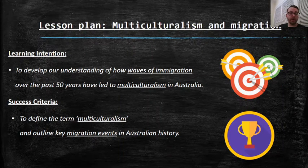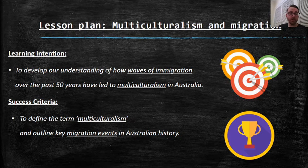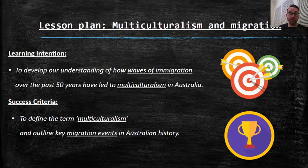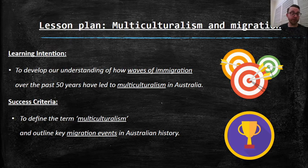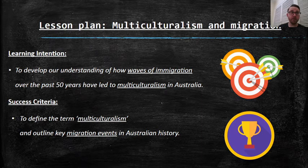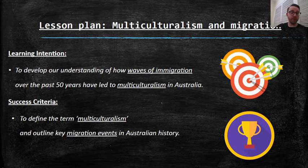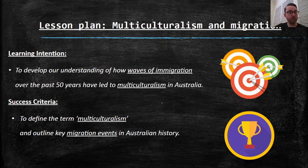Hi Year 10, Mr. Tapley here for your next lesson of Year 10 History. This lesson we are looking at multiculturalism and migration — developing our understanding of how different waves of immigration over the past 50 years have led to the multiculturalism in Australia today. That's one of my favourite things about history: learning about how we got here, how our present has been shaped by the past.